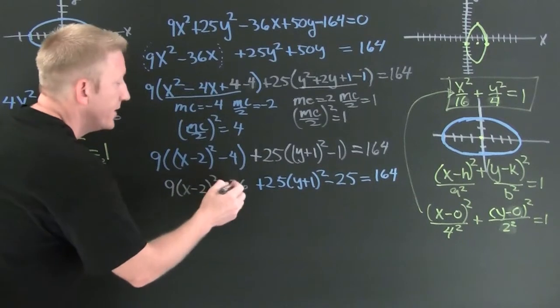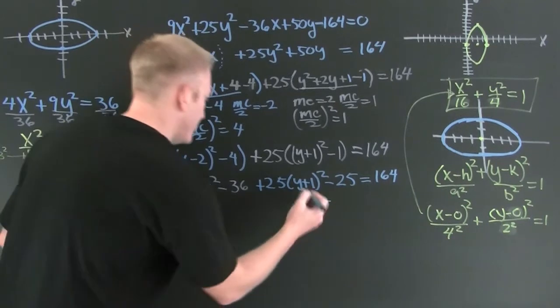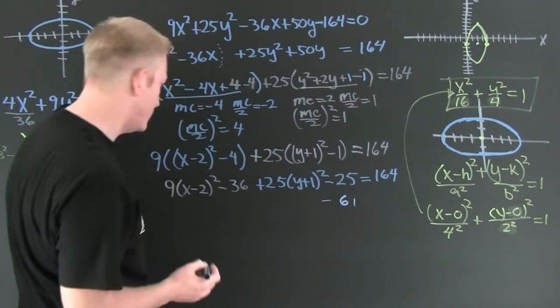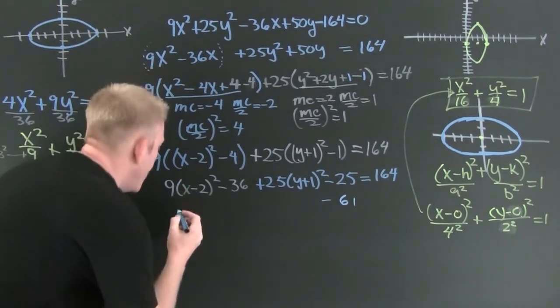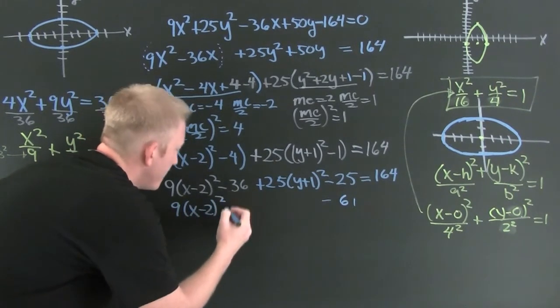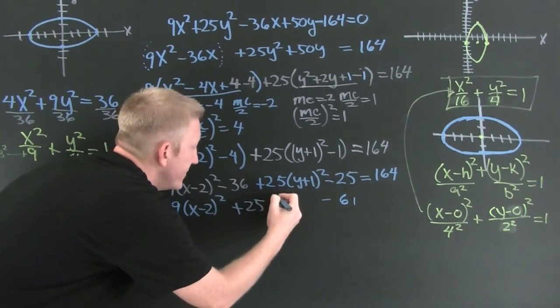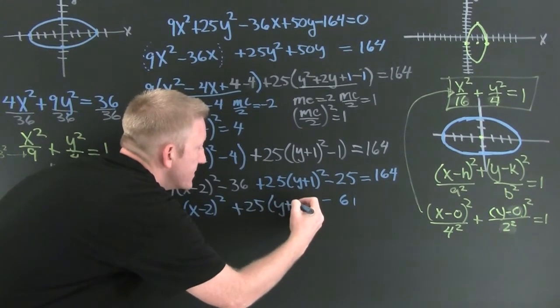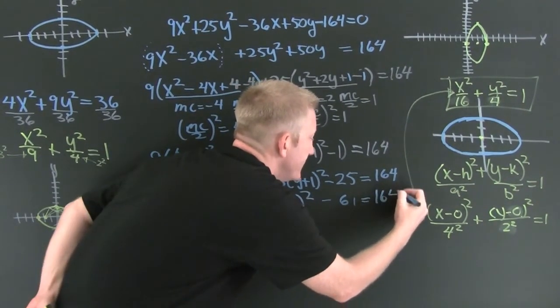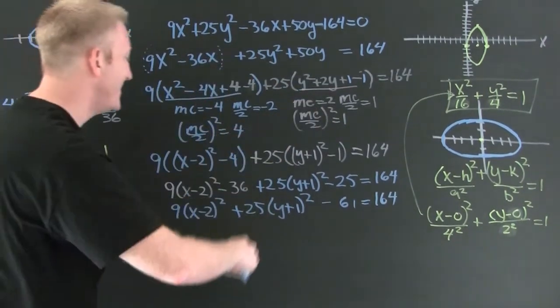36 and 25 gives me a minus 61. And then this is 9 times x minus 2 squared plus 25 times y plus 1 squared. And then that's equal to 164. Oh, but wait. There's more.